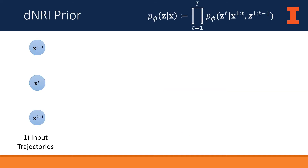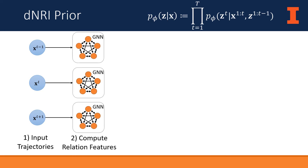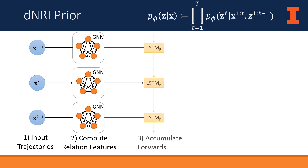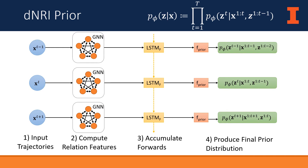The prior distribution factorizes in an autoregressive manner and is produced in the following way. At every time step, the input features for all entities are passed through a fully connected graph neural network. This results in a feature representation for all directed pairs of variables, represented by the edges of the graph. These embeddings are passed through a forward LSTM to accumulate information about the history of the sequence. Finally, at every point in time, the hidden state of the LSTM is passed through a multilayer perceptron, producing the logits of the prior distribution.